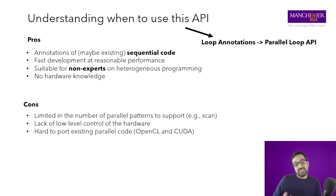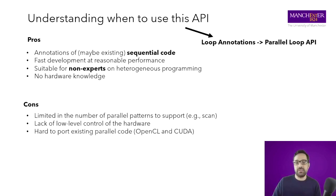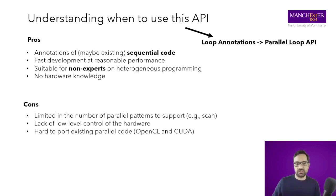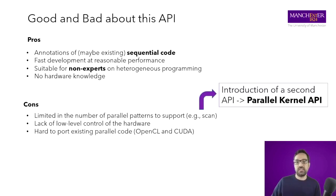As a limitation, the Loop Parallel API is limited in the patterns it can run. We can run the typical map pattern — like the filter, where you compute a function for each pixel — but other patterns like scan or complex stencils are hard to express with this API. Also, this API doesn't allow the developer to have control over the hardware. And if you have existing OpenCL or CUDA code and want to port it to Java, it might be hard. To solve these limitations, we introduce a second API: the Parallel Kernel API.